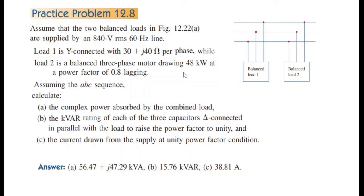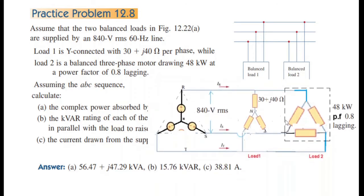The description: assume that two balanced loads in figure 12.22 are supplied by 840 volt RMS, 60 hertz line. We can redraw it — the source, load number one, and load number two. 840 volt line means 840 volts line-to-line.